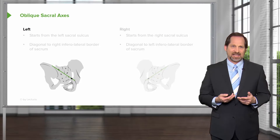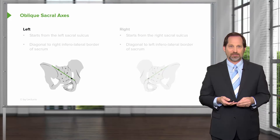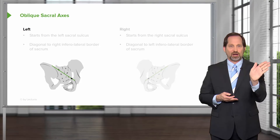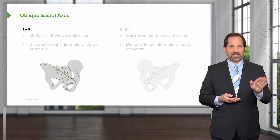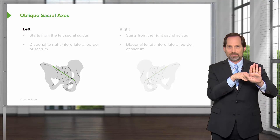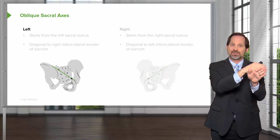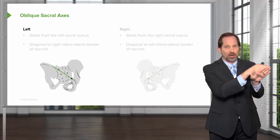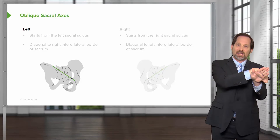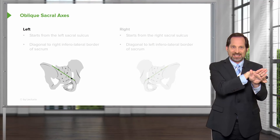The oblique axis is what I focus on most because walking is what causes problems most often. When naming an oblique axis, you name it by where the motion is occurring off of. If the left upper pole and right lower pole of the sacrum are set, it's going to be a left axis — named from the top — where the left is set and motion occurs along that axis, with the right and left lower parts moving in and out. That is an oblique sacral axis on the left.